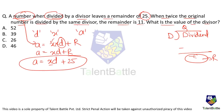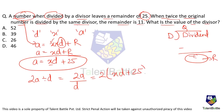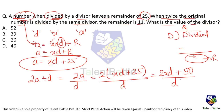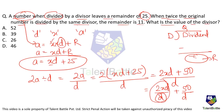Expanding: 2A = 2XD + 50. Dividing by D gives 2XD/D + 50/D. The term 2XD/D is completely divisible by D, so it contributes no remainder. The remainder comes only from 50 divided by D, and that remainder is given as 11.